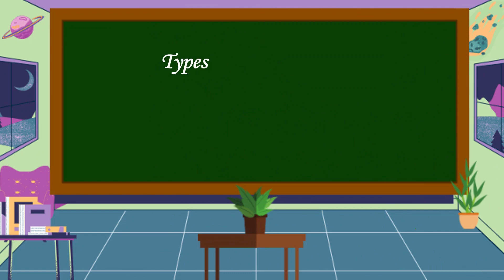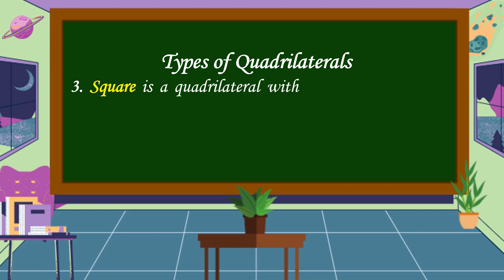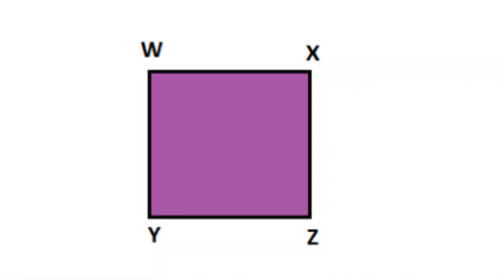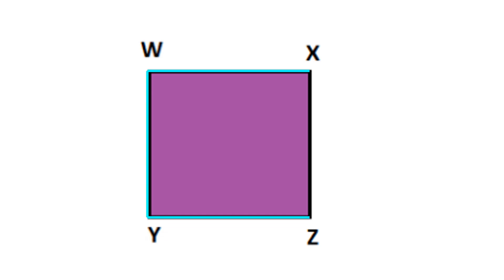The third type of quadrilaterals is a square. A square is a quadrilateral with all four sides equal. Every vertex of a square makes a right angle with its sides. WX is congruent to YZ, and WY is congruent to XZ. Angle W equals angle X, equals angle Y, and also equals angle Z. All the angles are 90 degrees with a total of 360 degrees.